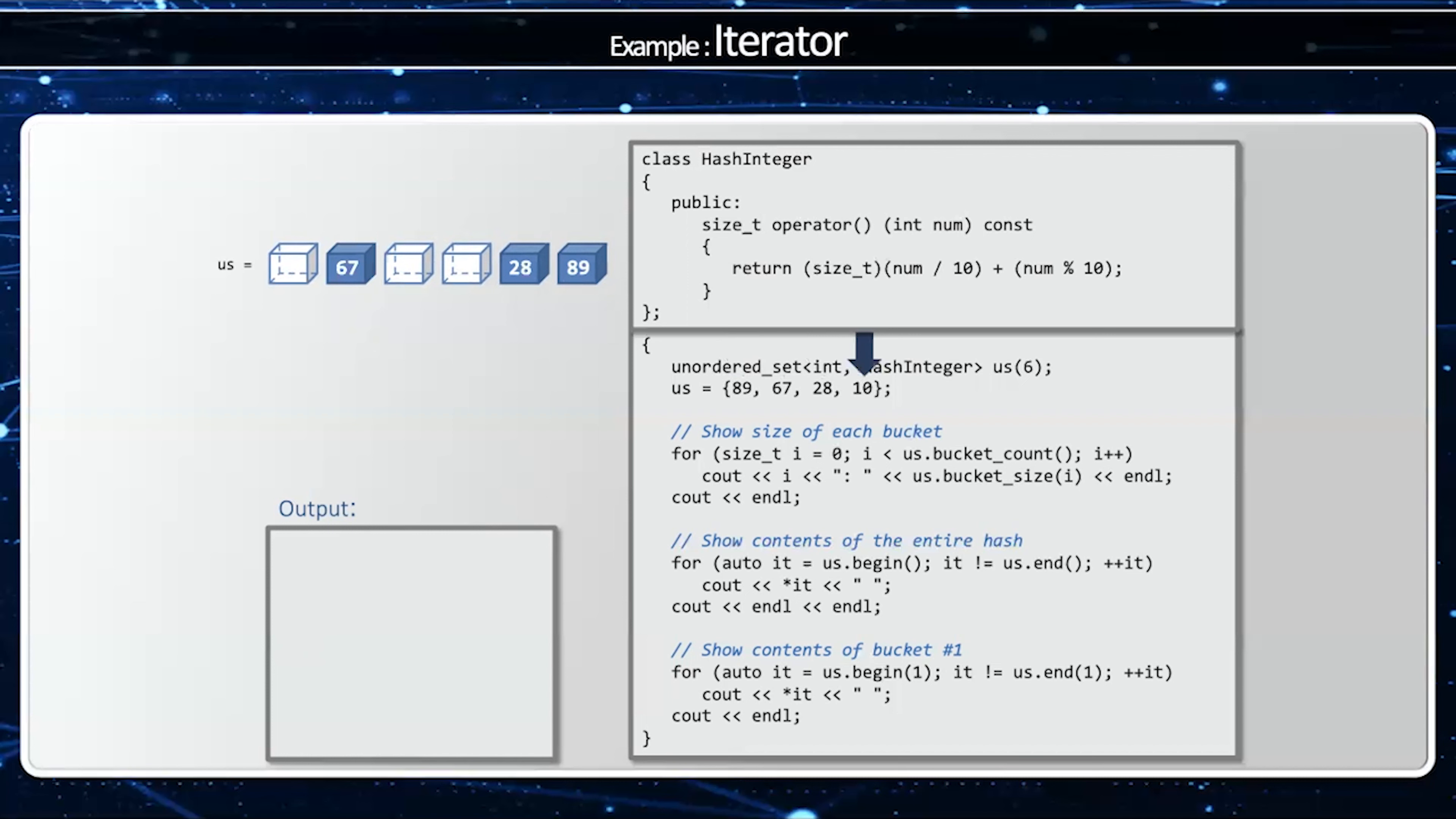10 is 1 plus 0 gives me 1. 1 mod 6 gives me 1. So now when I display the size of each bucket I'm going to get 0, 2, 0, 0, 1, 1.